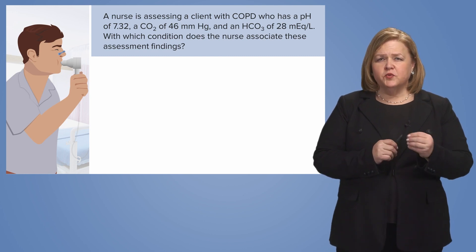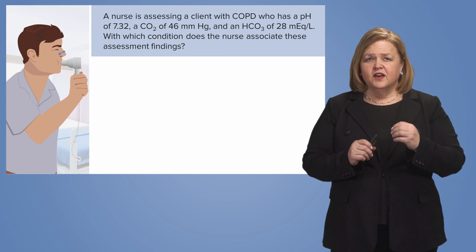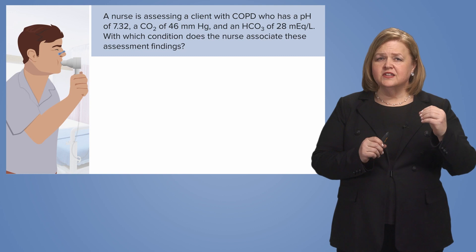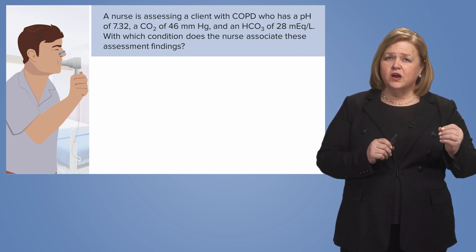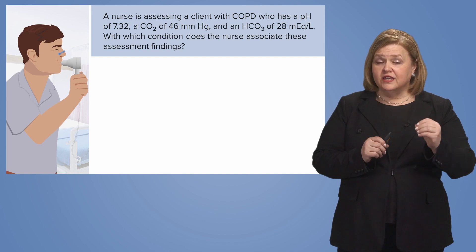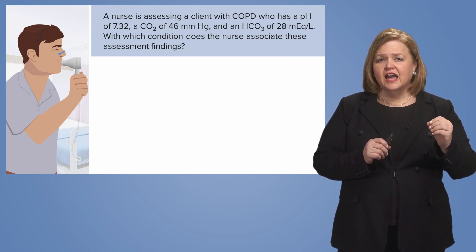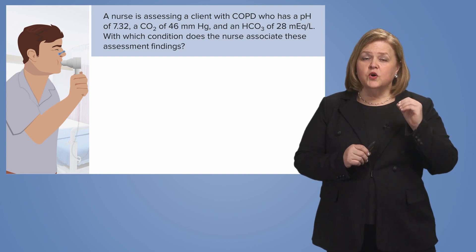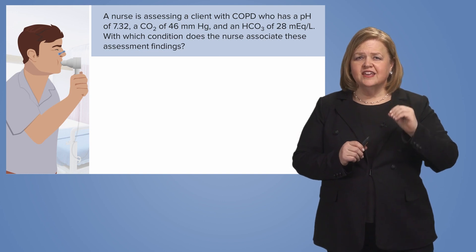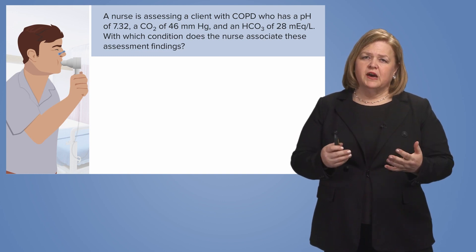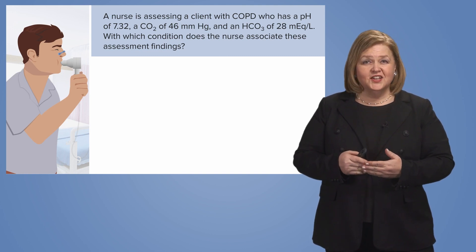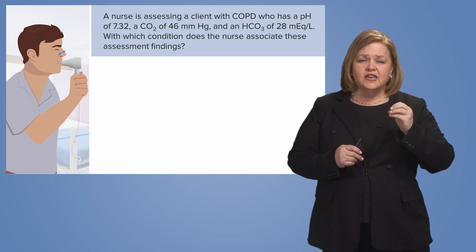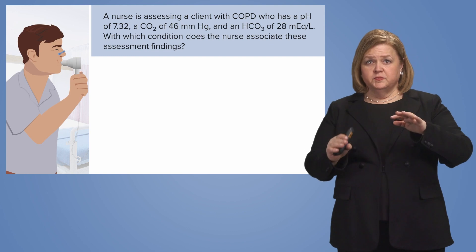Normal pH is 7.35 to 7.45. Now I want you to work through the rest of the options. CO2 — is that high or low? Bicarb, or HCO3 of 28 — is that high, low, or normal? We're going to find out which condition the nurse associates with these findings, and we'll likely have four options to identify the best description of where this patient is.